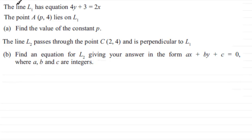What we've got here is the line L1 has equation 4y plus 3 equals 2x and the point A which has coordinates (P, 4) lies on the line L1. In the first part A we've got to find the value of the constant P. So we'll start with that bit first of all.